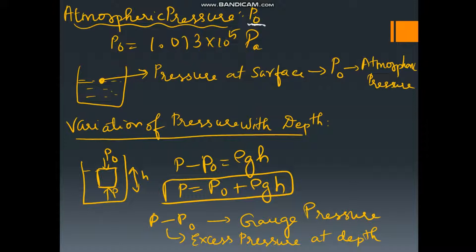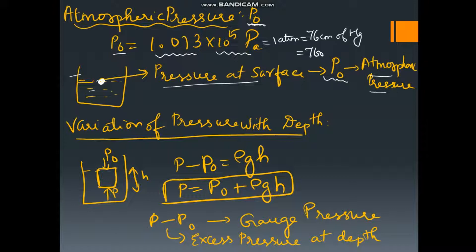Atmospheric pressure is indicated by the letter P0. Suppose you assume a beaker in which there is water — the pressure at the surface is the atmospheric pressure P0. Its value is P0 = 1.013 × 10⁵ Pascal, equal to 76 cm of mercury, equal to 760 mm of mercury, equal to 760 torr.